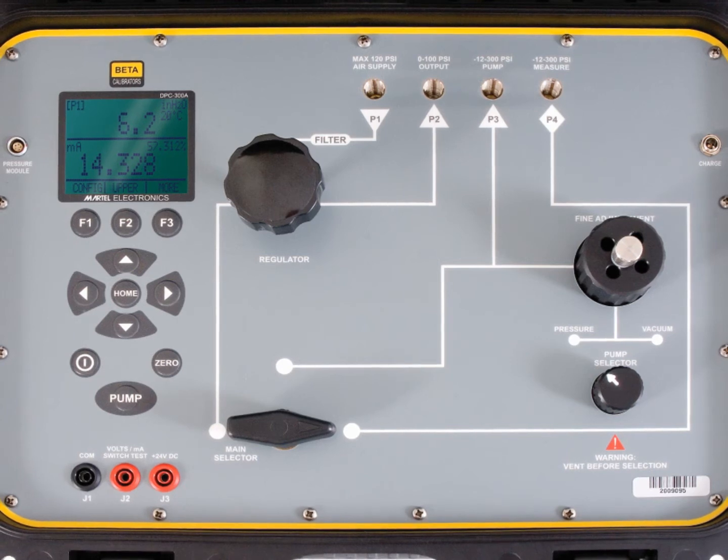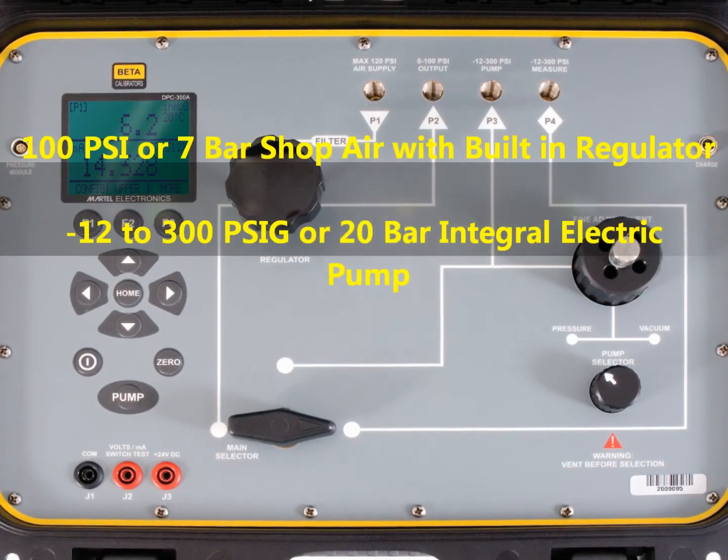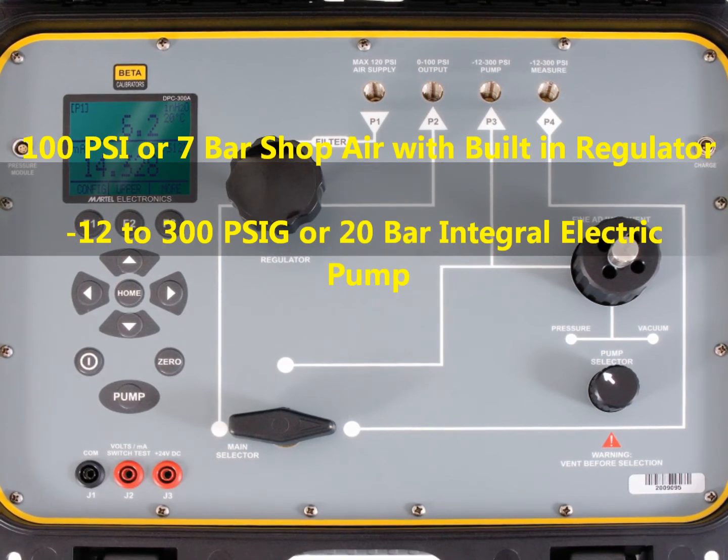By dual system, we mean the calibrator can be used with shop air up to 100 psi or the internal pump which handles up to 300 psi.